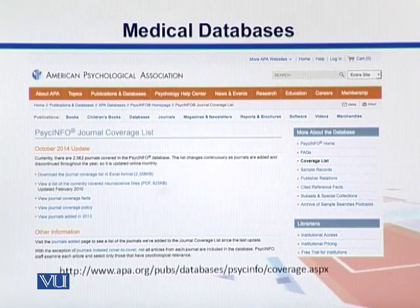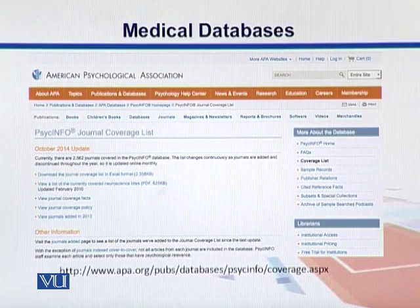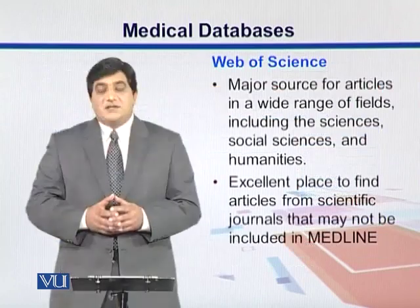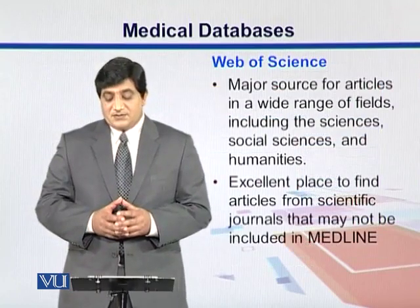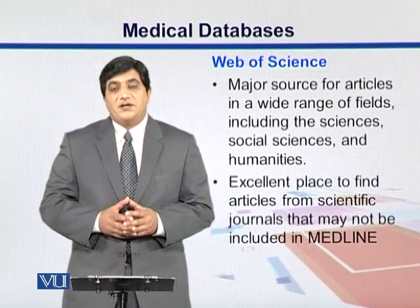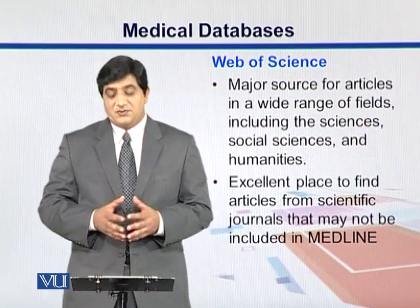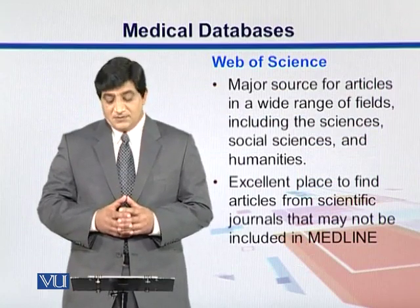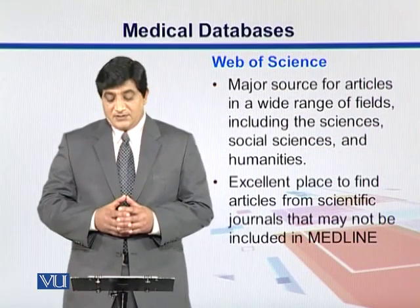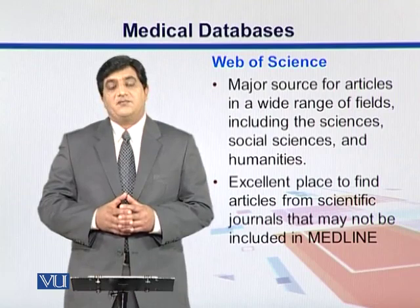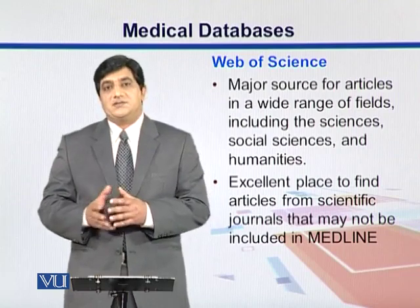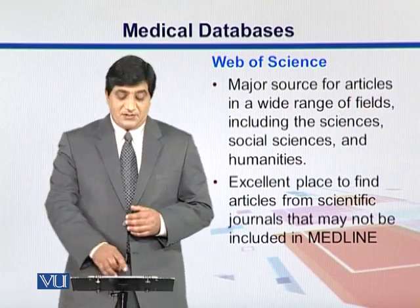Here is the page for the American Psychological Association — you can see PsycInfo journal and its different coverage lists. Web of Science is another major source for articles; mainly it covers social sciences and humanities, and it's an excellent place where you can find journals which may not be present in Medline.